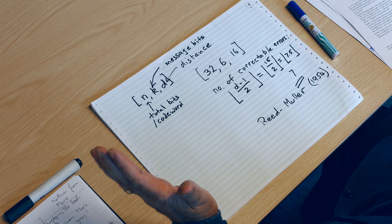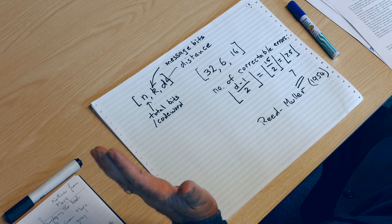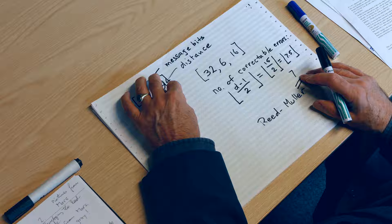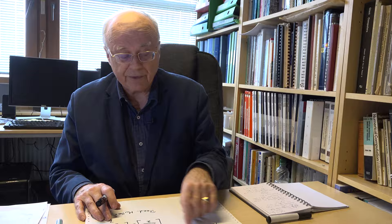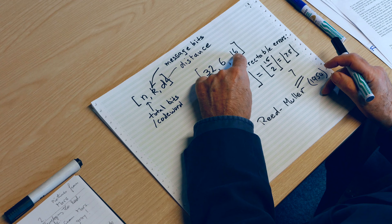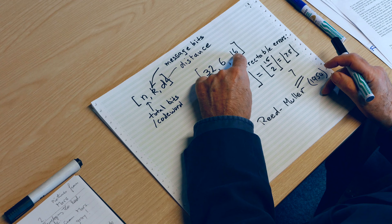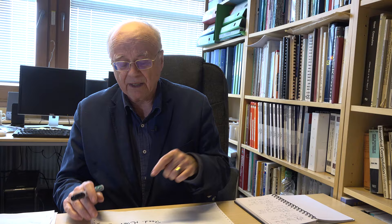We're now getting down to hardcore details involving recursion and bit twiddling. Just for revision: the total number of bits in what you're sending, including payload bits, message bits, and parity check bits — that's N. Within that, how many bits are devoted to the message itself? K. What's your distance? The bigger that number is, the more errors you can correct. The correctable errors is your distance minus 1, divided by 2, take the floor.